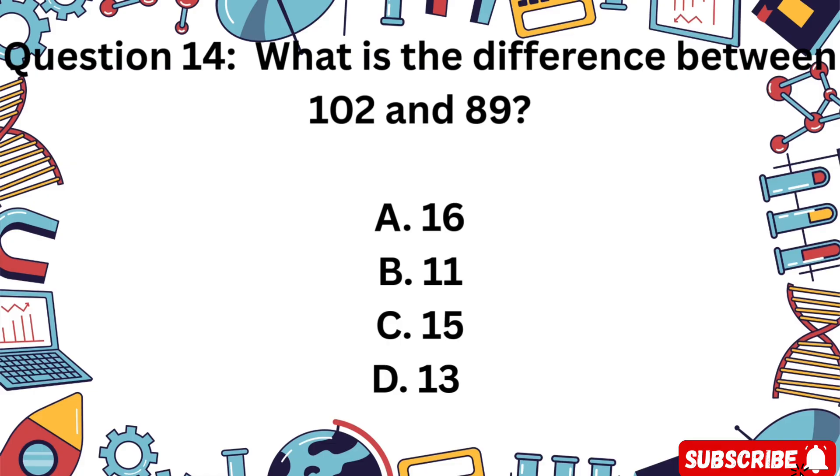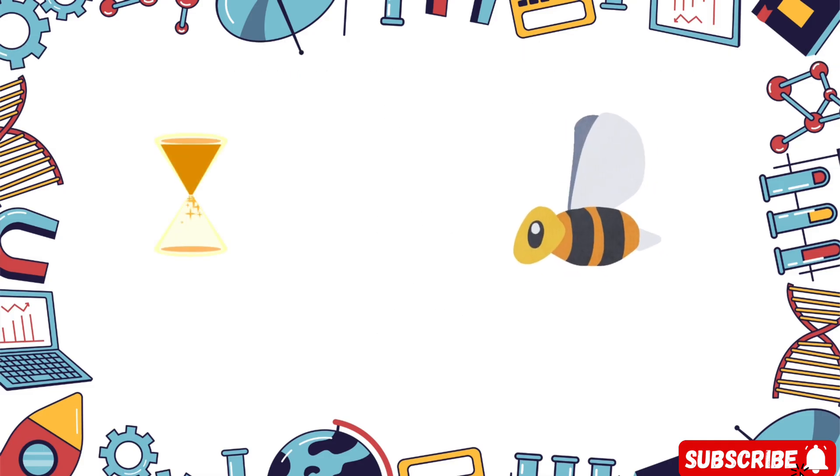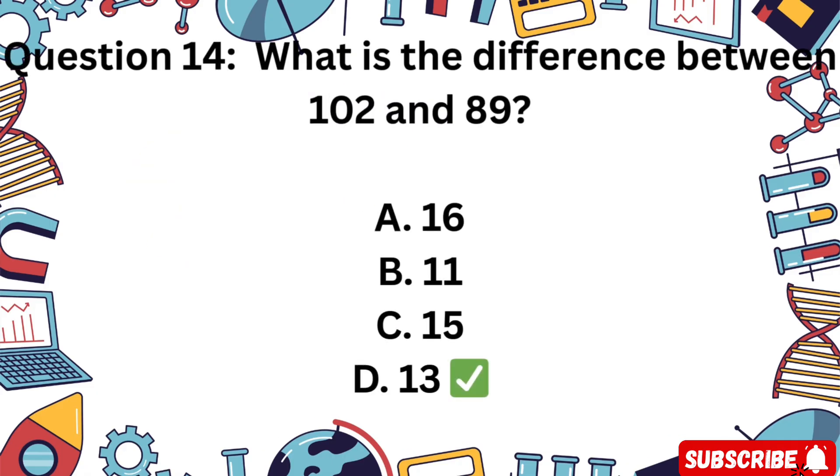Question 14: What is the difference between 102 and 89? Is it A 16, B 11, C 15, or D 13? Great. 102 minus 89 equals 13.